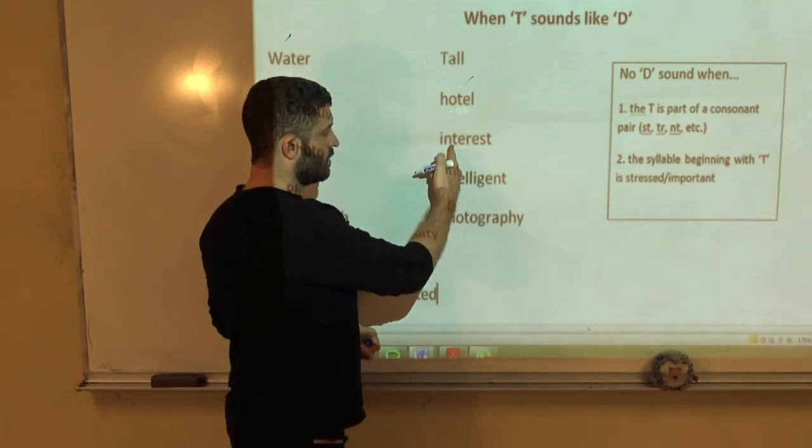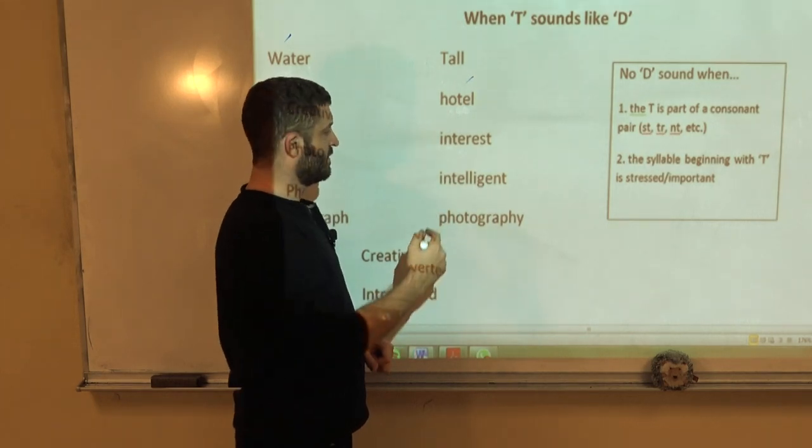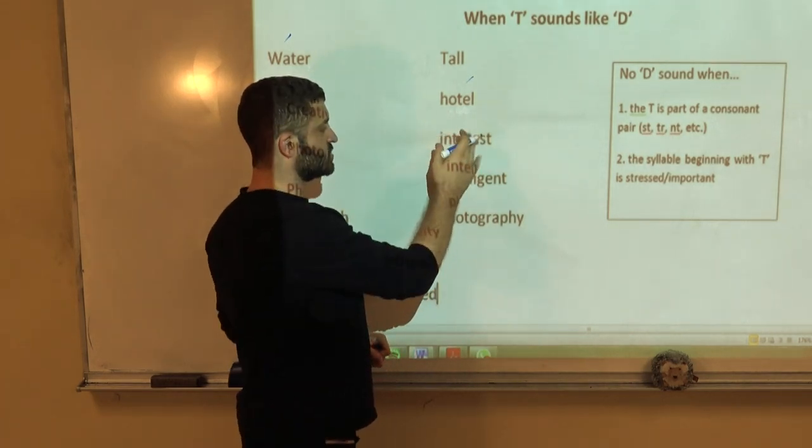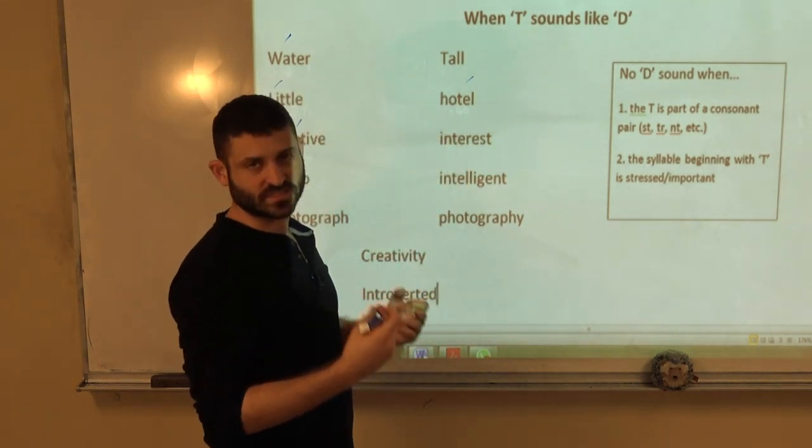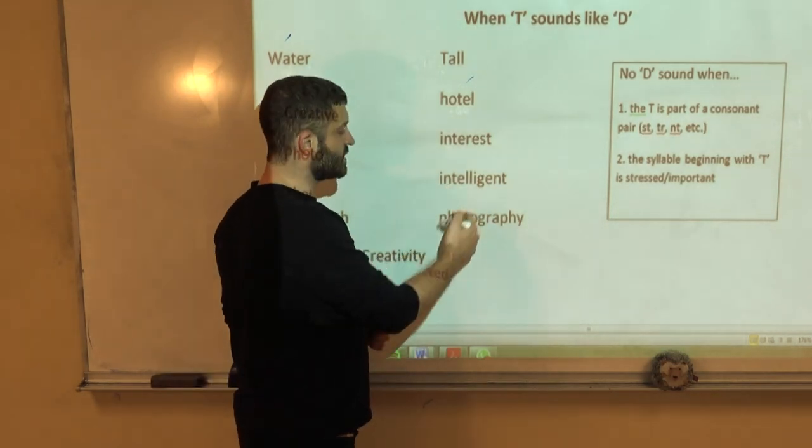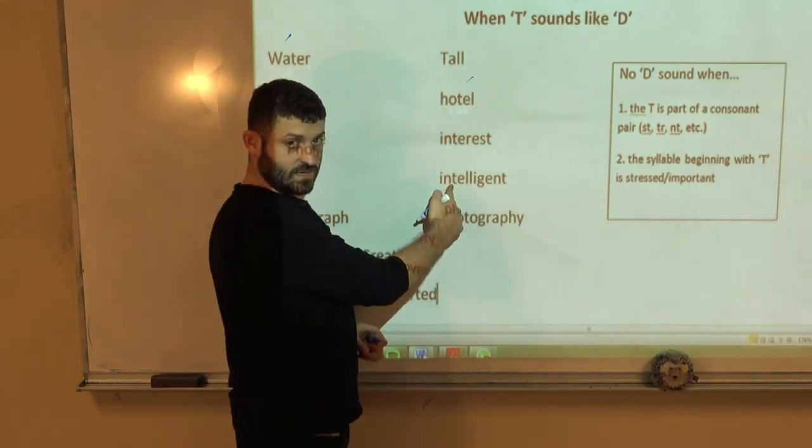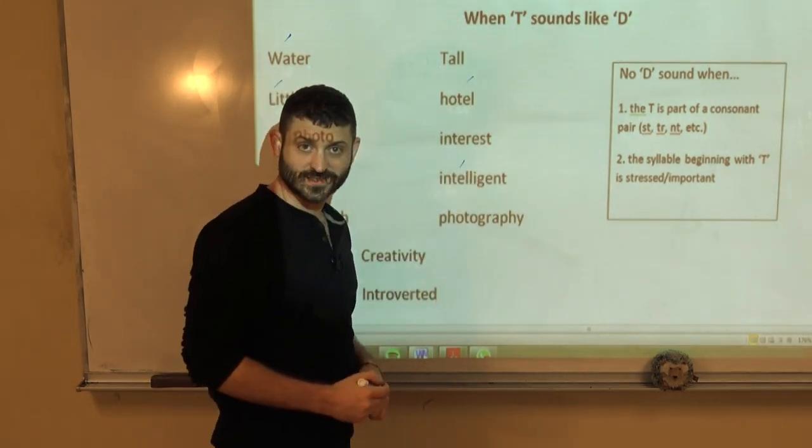Interest. Interest. Well, this is a consonant pair. N T, this is not a vowel dominant sound. So, we do not ever want to make the T a D in this situation. Interest. Same thing here. Intelligent. Two reasons why this is not a D. The N-T. And, this is stressed. Intelligent.